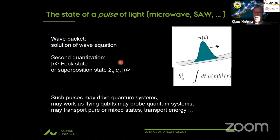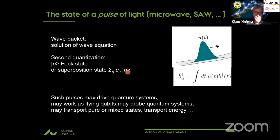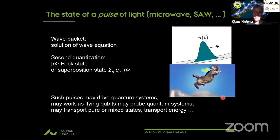We just have to remember the dynamics: the photon number doesn't change but the wave packet moves — which is exactly why we use it, to communicate or transport information. Such pulses can be flying qubits prepared in superpositions of two orthogonal states to encode quantum information, probe pulses to probe a quantum system, or used to transport pure or mixed states. As long as you're propagating through a linear medium, the state remains the same — you're just moving your quantum state from side A to side B.